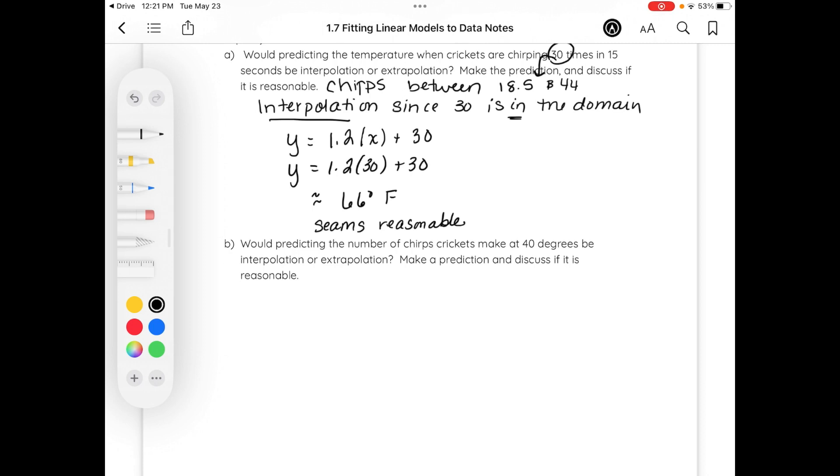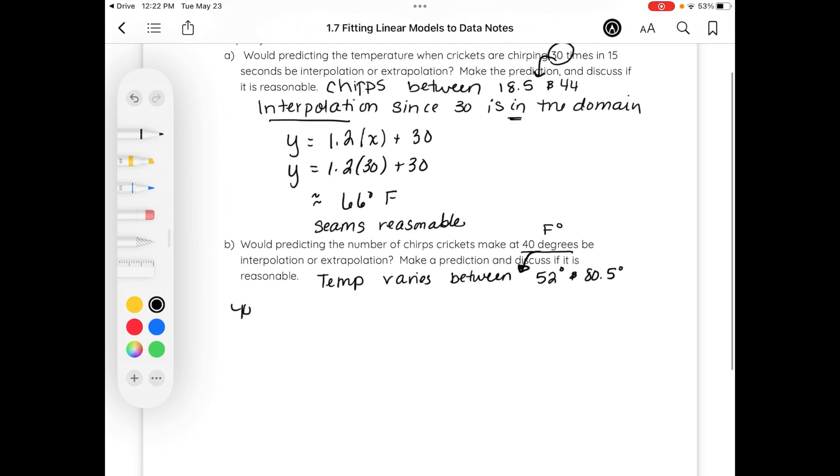However, would predicting the number of chirps crickets make at 40 degrees, so this is at 40 degrees Fahrenheit, be inter or extrapolation and make a prediction and discuss if reasonable. The temp from the previous page varies between 52 and 80 and a half degrees. 40 degrees is not inside. So 40 degrees is outside the range of data. So this would be extrapolation.